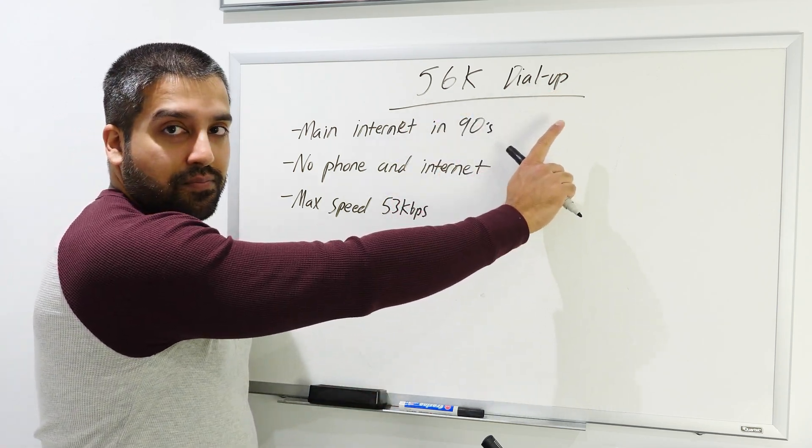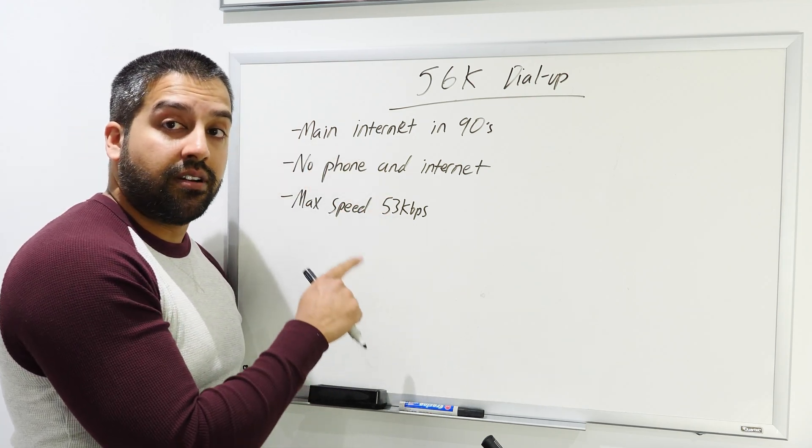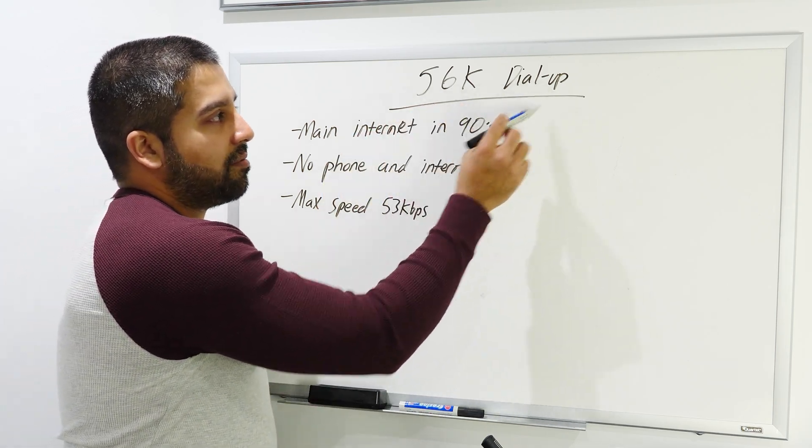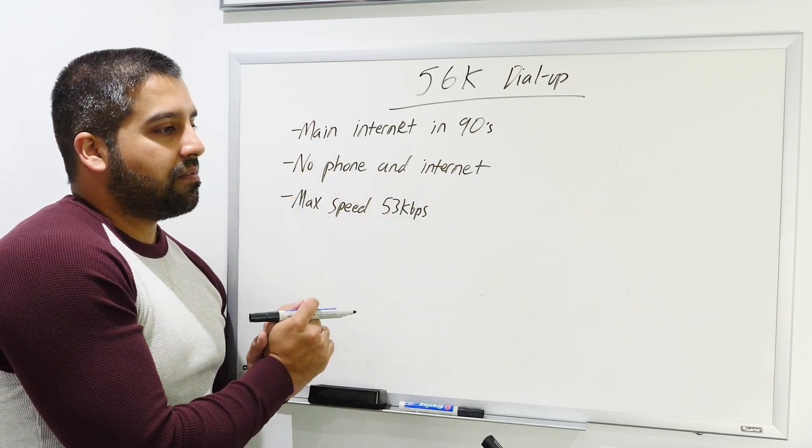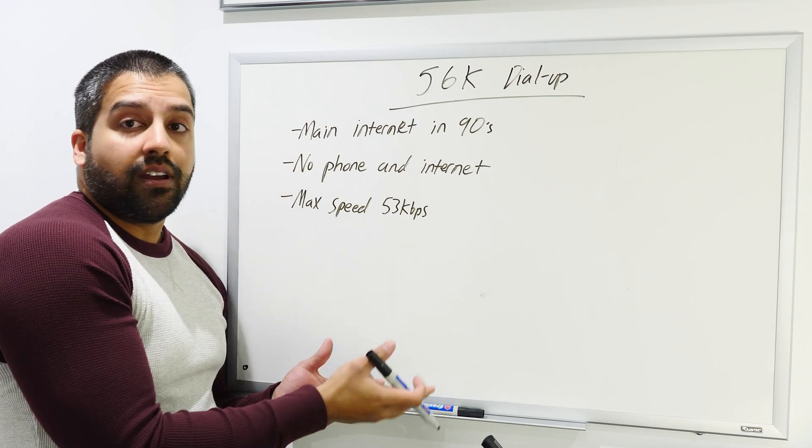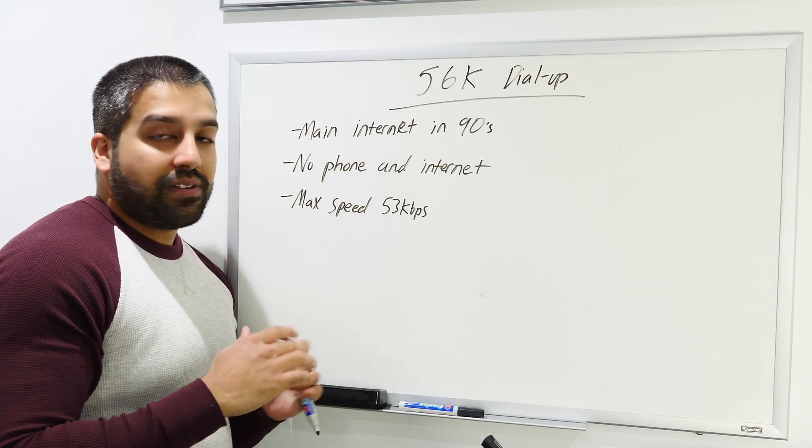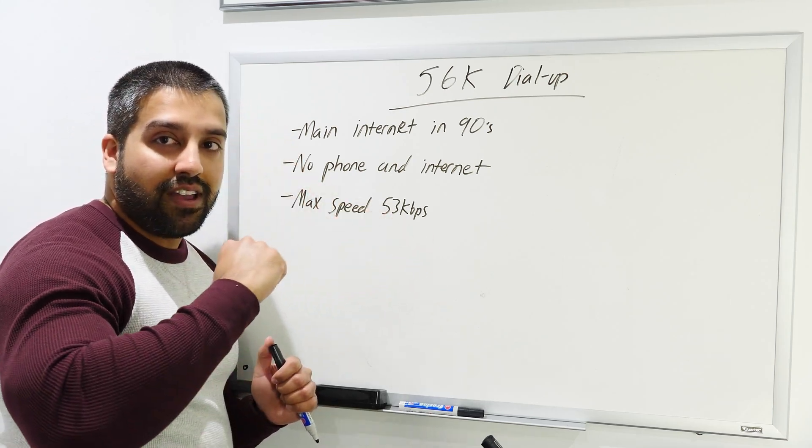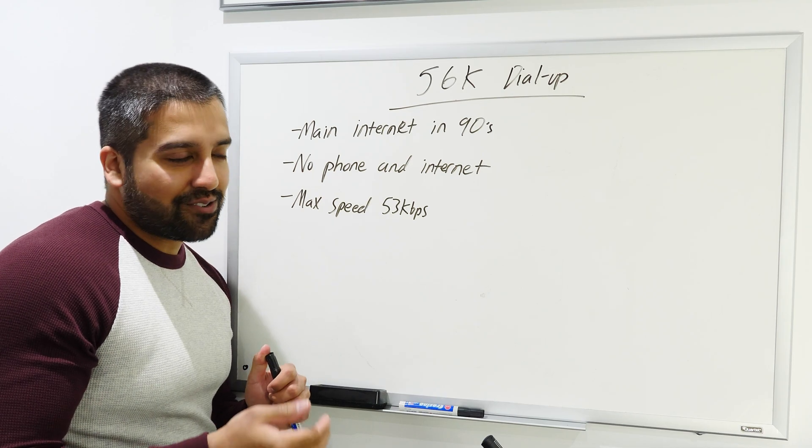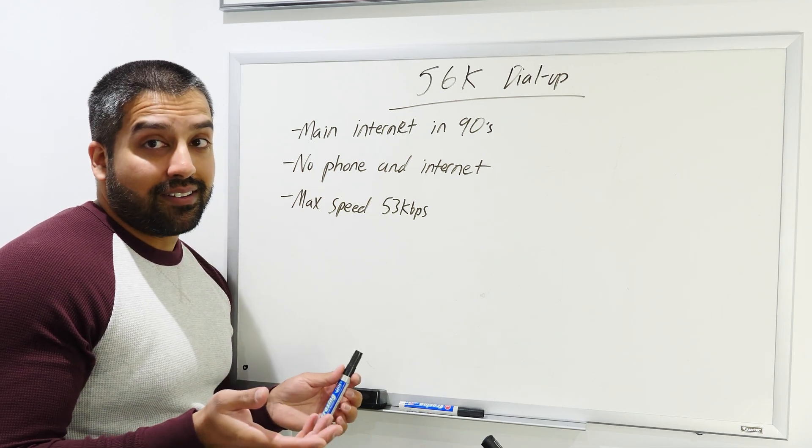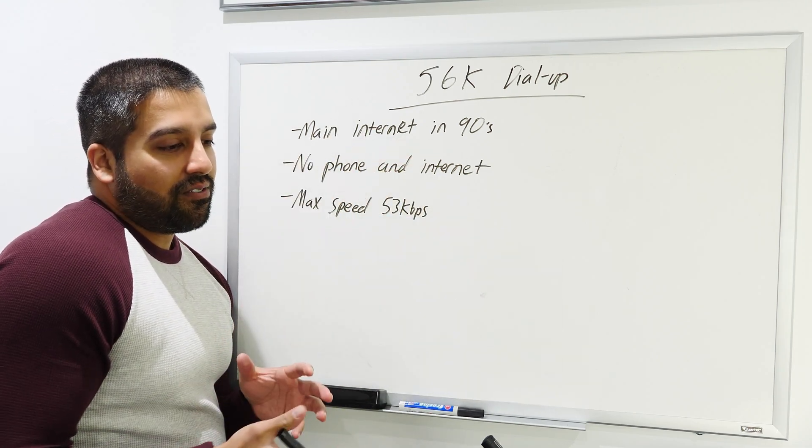The next one I'll discuss is 56K dial-up internet. I know some people are going to think this is a complete waste of time, but I'm going to go over it very briefly because it helps you understand DSL internet. 56K dial-up used your phone line, so the infrastructure was widely available, probably even more so than cable internet. It was the main source of the internet back in the 90s. I remember being a kid, every time we went to the library we would grab a stash of AOL CDs because each CD would give you an hour free of internet service at home.